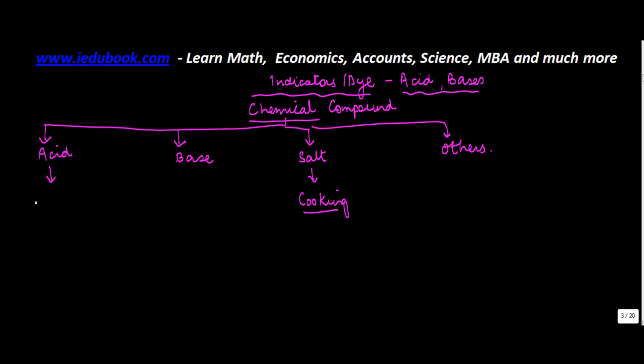Our body also produces acids, one common one being hydrochloric acid, which is used for digestion of food. Then there are bases like baking soda, which is used for making breads.